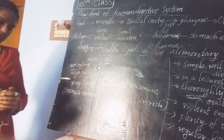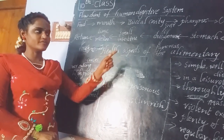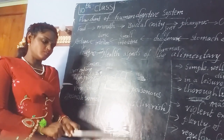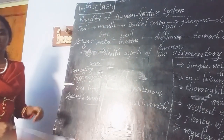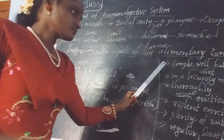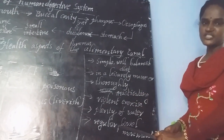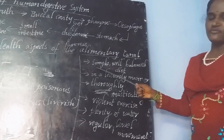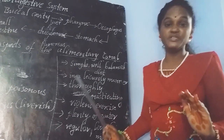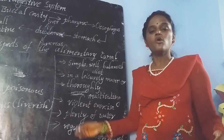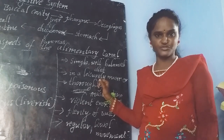Most people don't know the healthy habits needed to keep our alimentary canal healthy. We have to follow certain rules. First, we have to take only a simple and well-balanced diet. Our diet should be simple and contain all the nutrients. Balanced diet means the food we take should have all varieties of nutrients in it, but it should be simple, not very rich.